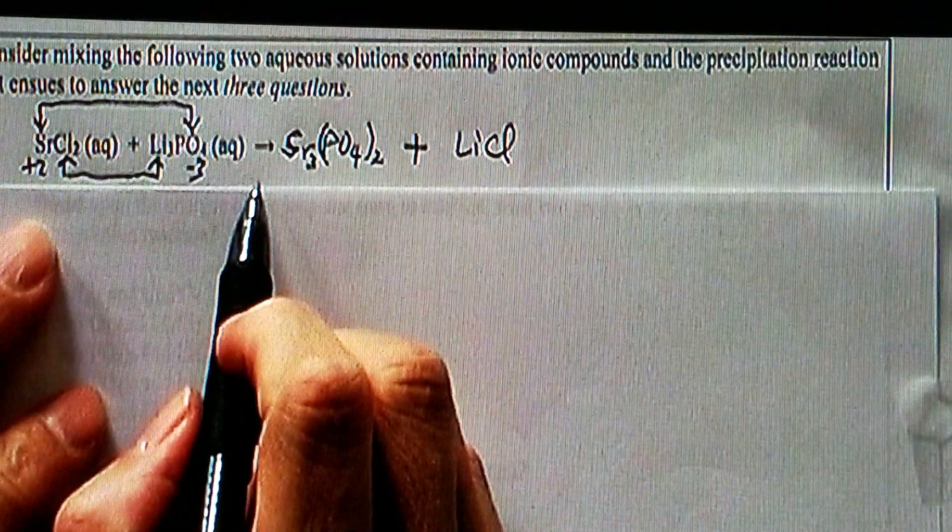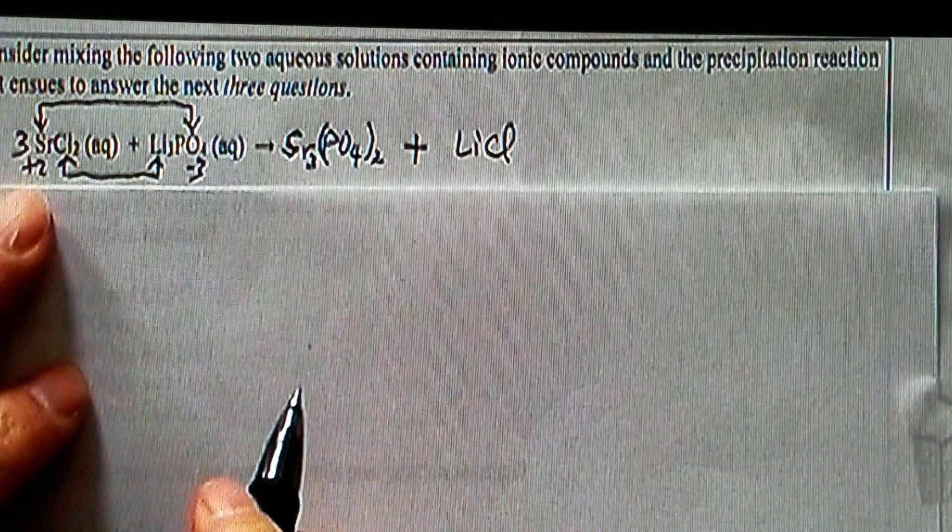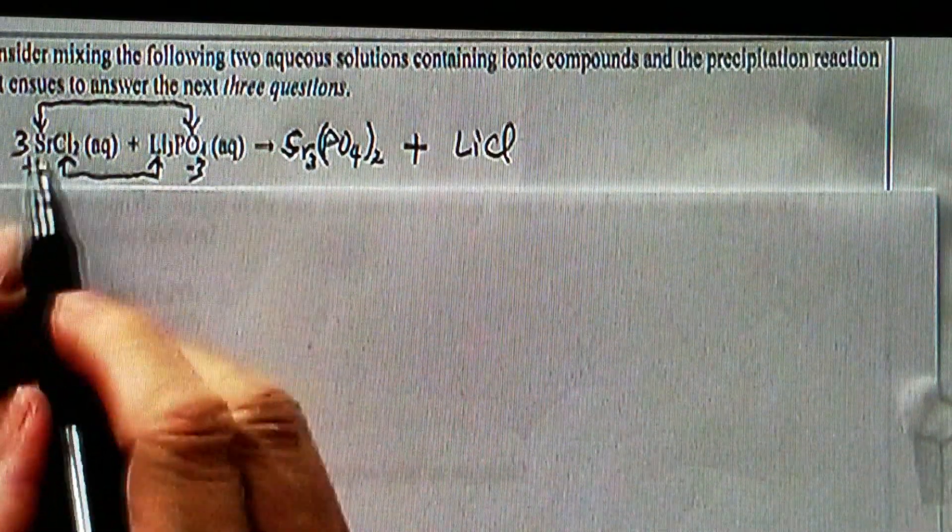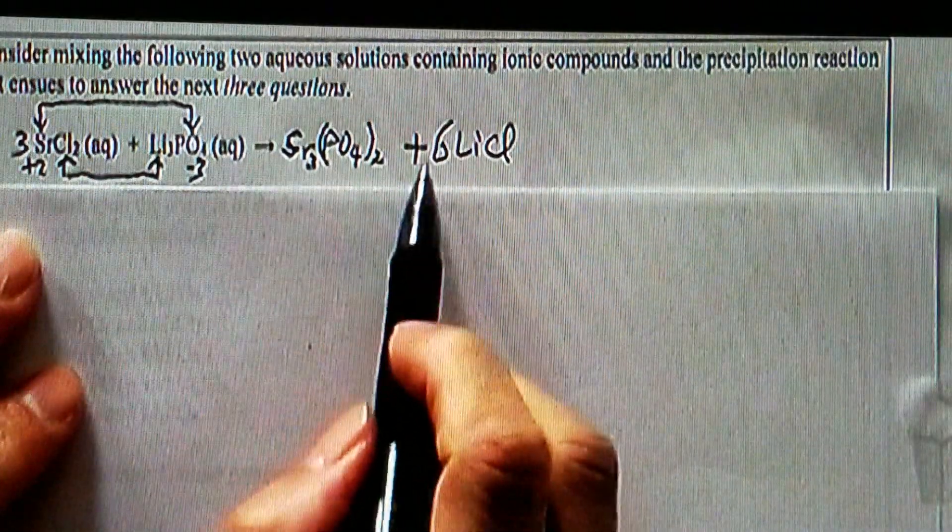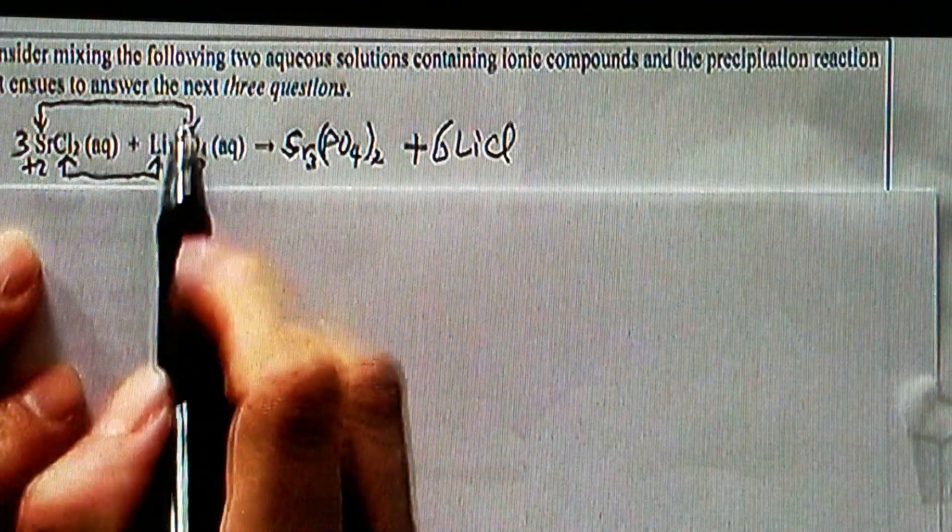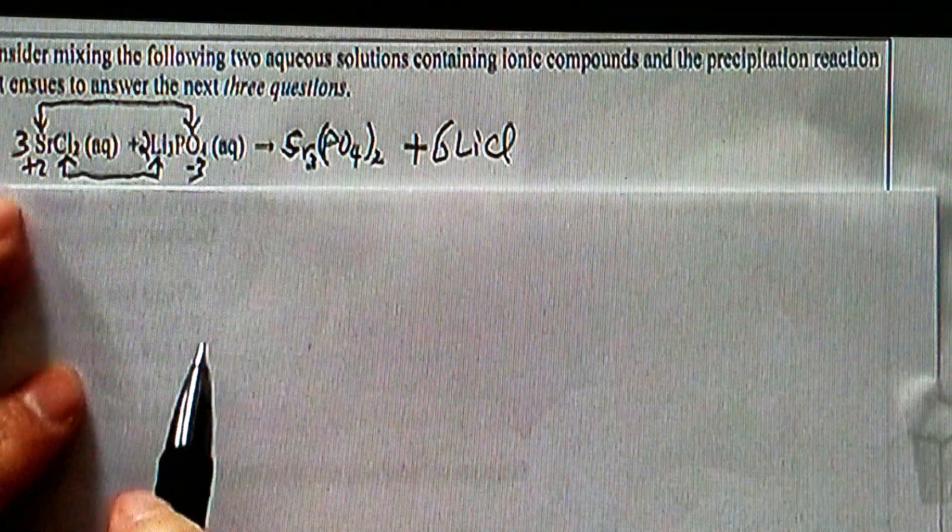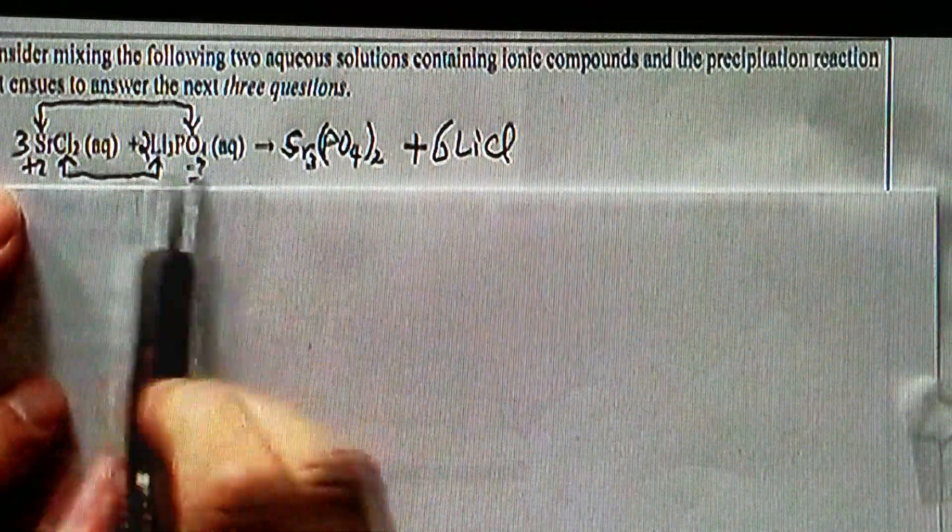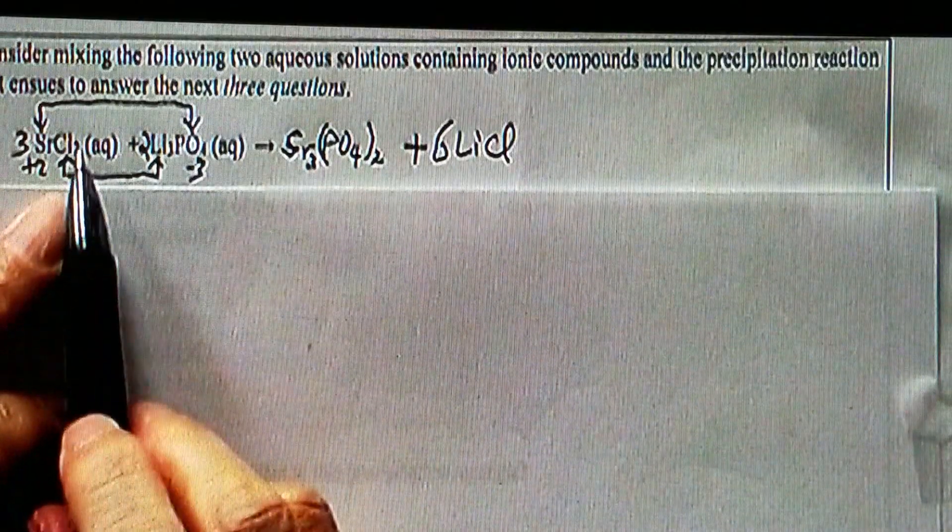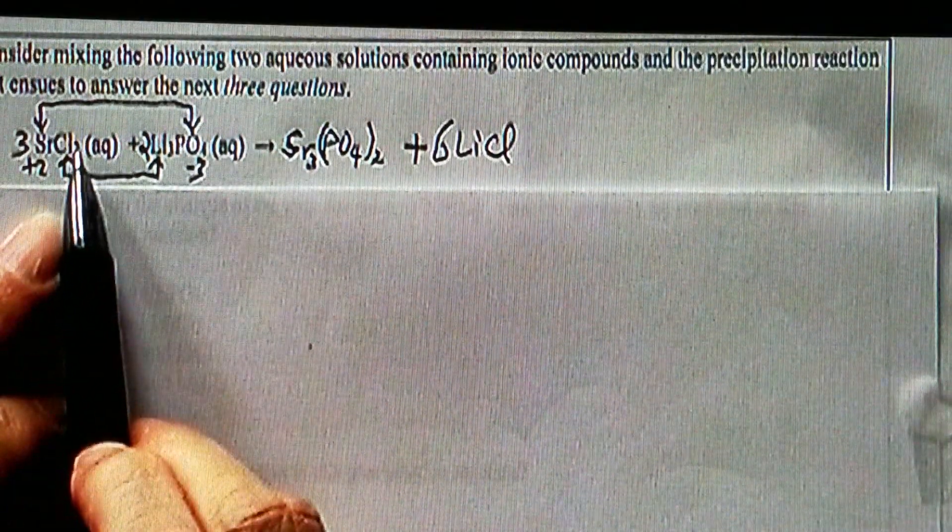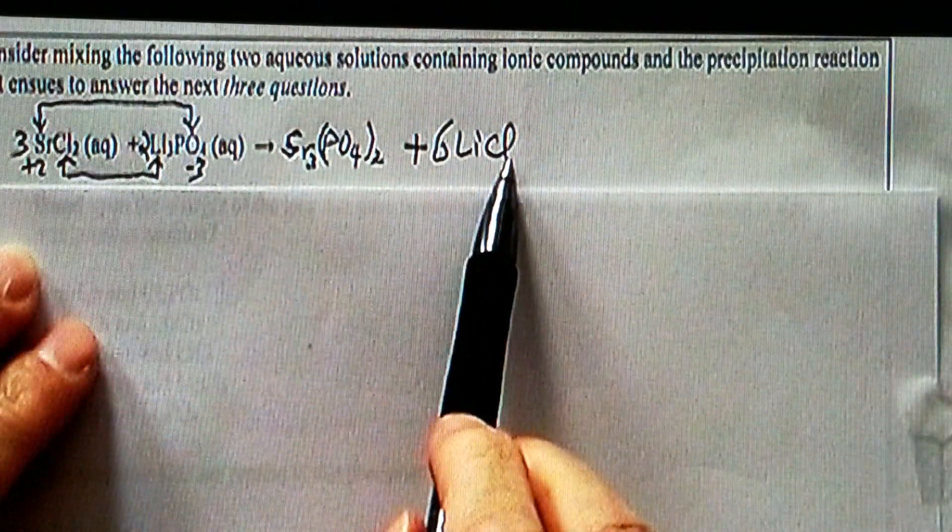So it's not balanced. We have three Sr here, I will just have to put three there. That gives me six chloride, and I will put that here. That gives me six lithium.